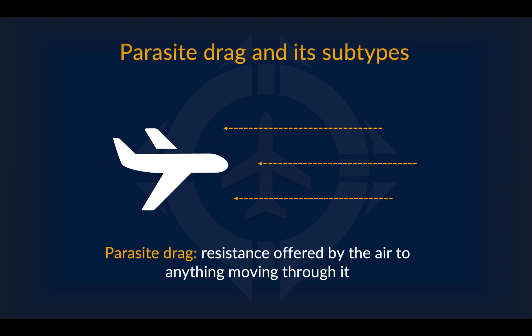The first type of drag we're going to be discussing is parasite drag, which is simply resistance offered by the air to anything moving through it. As we said in the last video, it may be helpful to think of it as aerodynamic friction, in that friction causes drag to be generated, slowing an aircraft down.